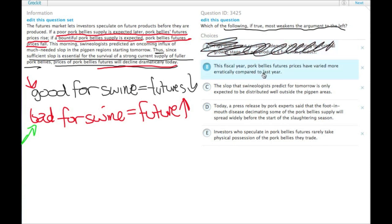B, this fiscal year, pork bellies futures prices have varied more erratically compared to last year. The variance is not a factor. That's not something bad for pigs. We need something bad for pigs so that futures prices go up to weaken the argument.